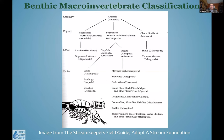There are a number of ways macroinvertebrates are classified, looking at how animals are categorized generally and then specifically at the order level. Within mayflies, stoneflies, or caddisflies there's a lot of variety. Generally we identify to the order level — mayfly or stonefly — but in some cases we get more specific, like with caddisflies, because some types are more or less pollution tolerant.